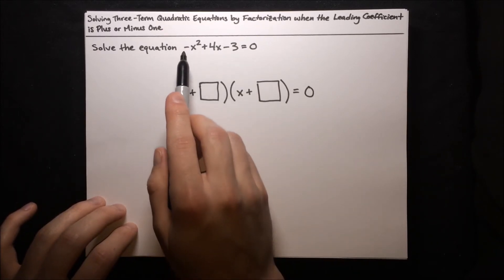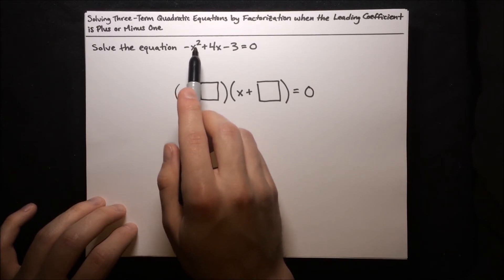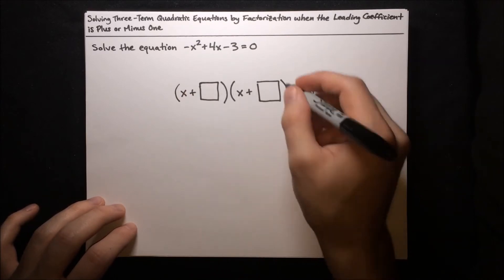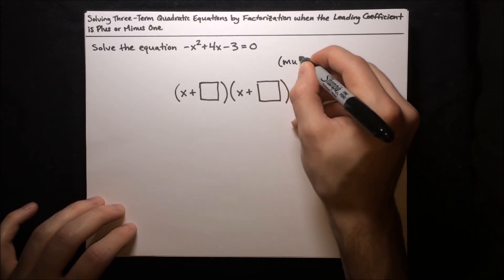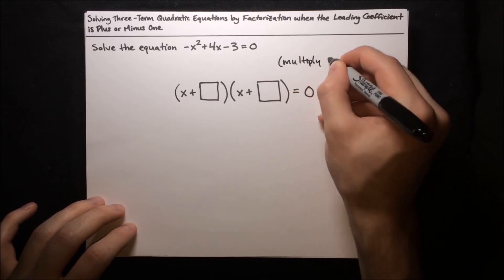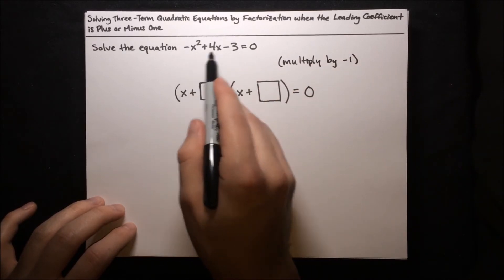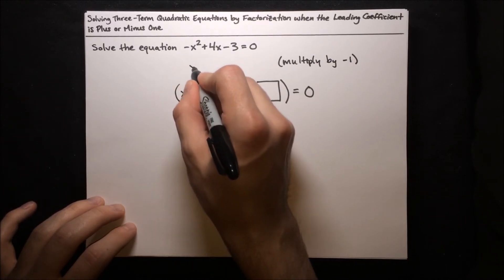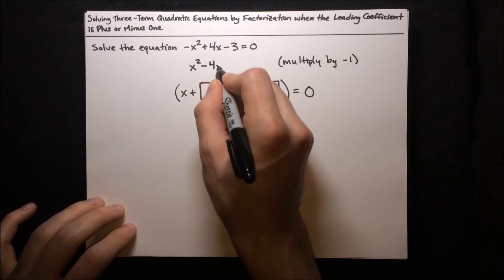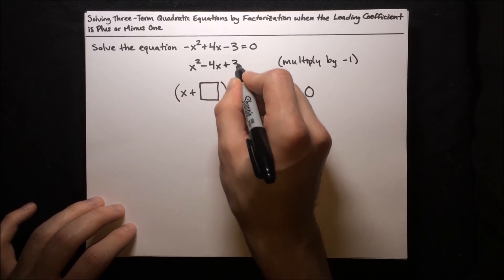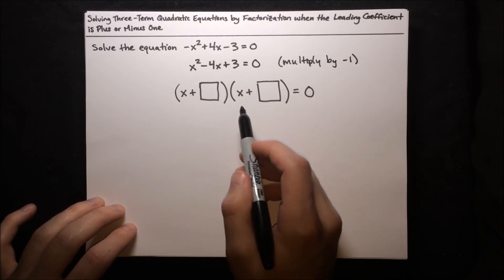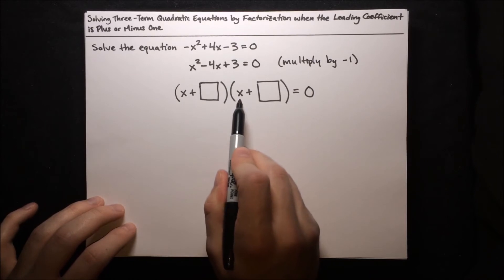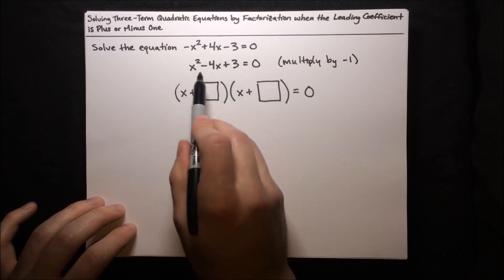We want to remove that negative in front of x squared. A valid way to do that is to multiply both sides of the equation by negative 1. Multiplying everything by negative 1 flips the sign of everything: negative x squared becomes positive x squared, then minus 4x, then plus 3 equals 0. Now we have a positive x squared, which matches x times x, and we just need to factorize this left-hand side.